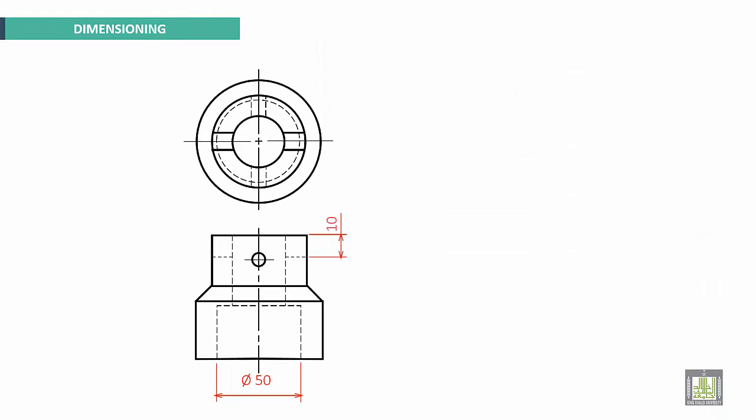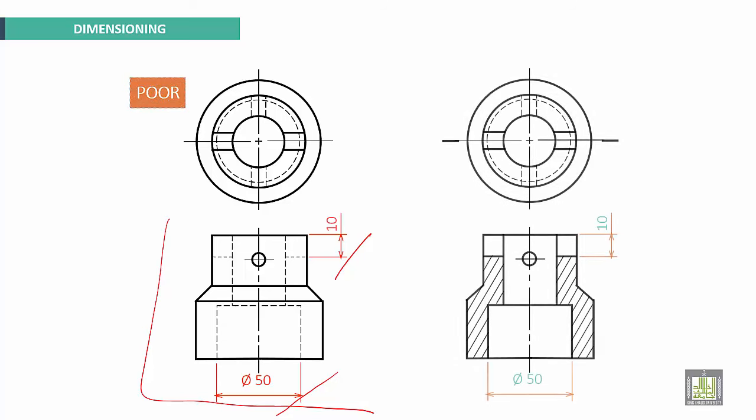Here another example. We use the original views with hidden lines and dashed lines to make dimensions. It is not really clear. It's better to use sectional view and put on it dimensions. Here it is really clear.